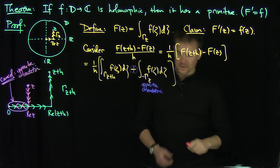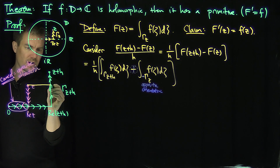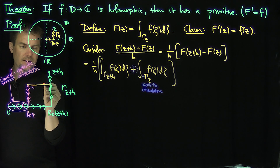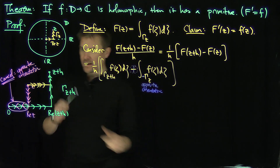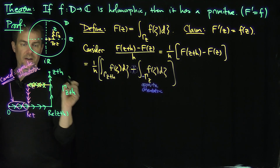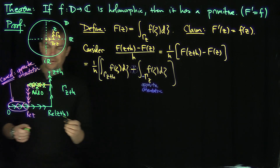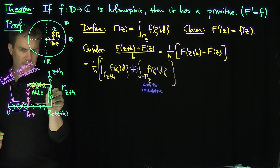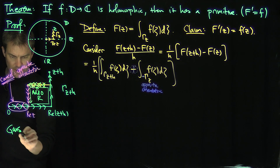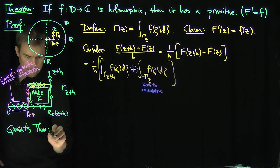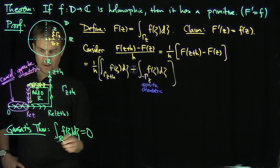Now we want to leverage Goursat's theorem. I'm going to find as many closed curves as I can. I'm going to close off a portion of the curve by adding it in and also subtracting it off — so I've added nothing overall. But now look what happens: going this way, then this way, then this way, then this way forms an oriented rectangle. By Goursat's theorem, the integral over this rectangle of F of zeta d zeta is equal to zero.